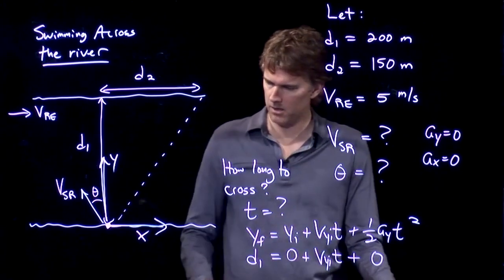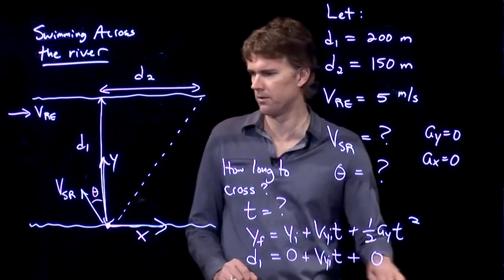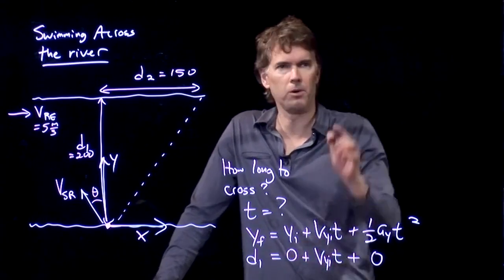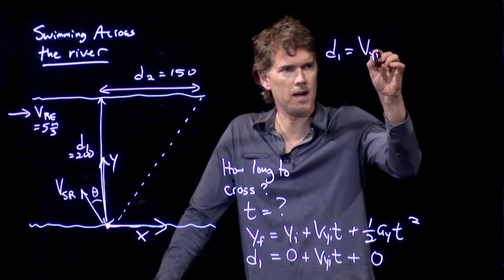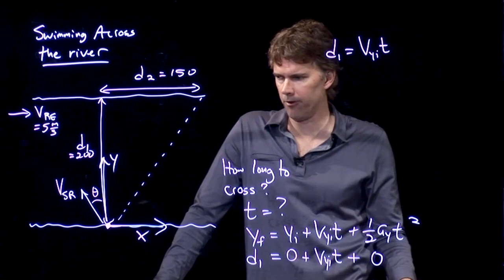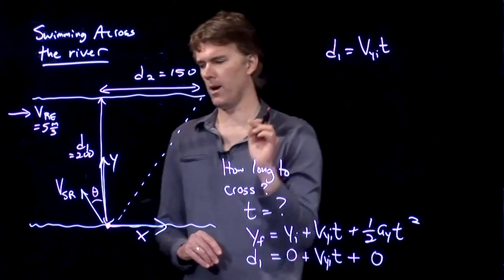Alright, so it seems like we might have enough. Well, let's take a look at it and double check. Okay, so let's take a look at this equation right here. We've got d1 equals v y initial times t. That looks like we might be able to solve that for t, except what is v y initial?